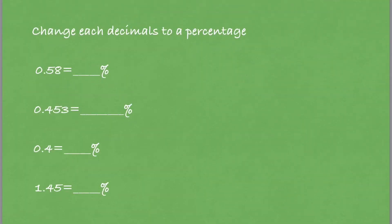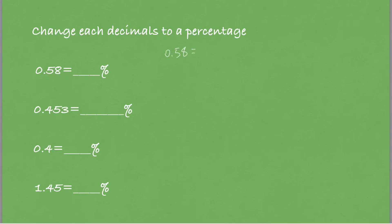Now we move on to the next example: changing decimals to percentages. For 0.58, we convert it to a fraction: 0.58 equals 58 out of 100. The denominator is 100, so I write the numerator as it is — 58 — and add the percent sign: 58 percent.